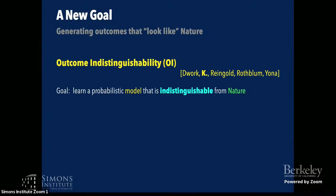I want to talk in a bit more detail about some newer work where we're trying to generalize multi-calibration and extend it further. This work is with Dwork, Rheingold, Rothblum, and Jona, and we're calling it outcome indistinguishability. We're putting forth a new goal for learning: rather than working in the PAC model, we want to learn a probabilistic model that is indistinguishable from the ideal outcome model — the true outcome model, which we call nature.